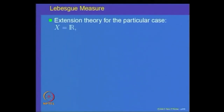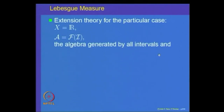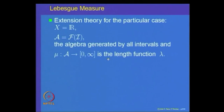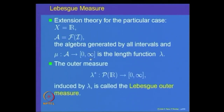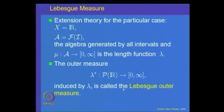For the extension theory, we apply it for the case where x is equal to the real line. The algebra A is the algebra generated by all intervals in the real line, and mu on this algebra is the length function. We have seen that the length function on the algebra generated by all intervals is a countably additive set function. The outer measure induced by this length function, denoted by lambda star, is on all subsets of the real line and is called the Lebesgue outer measure.